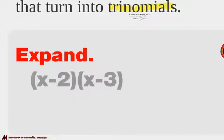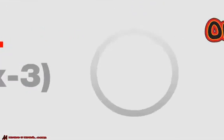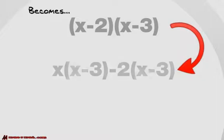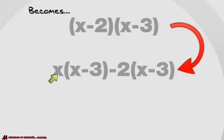Alright, expand this — how on earth do we expand this? We're going to talk about a specific way to expand. So x minus 2 times x minus 3. Really, if we use the distributive property, we take x minus 3, multiply it by x, and then take x minus 3 and multiply it by 2. So we get x times the quantity of (x minus 3) minus 2 times the quantity of (x minus 3).